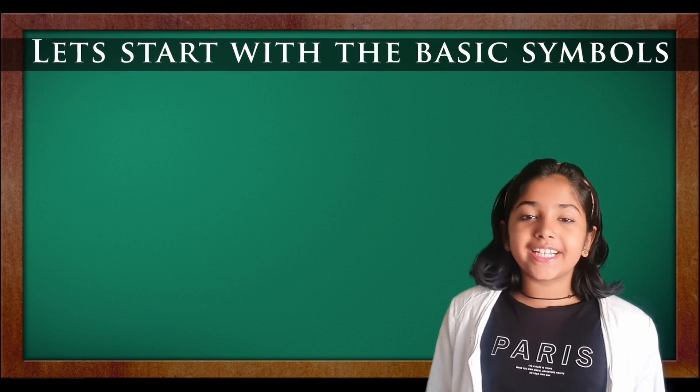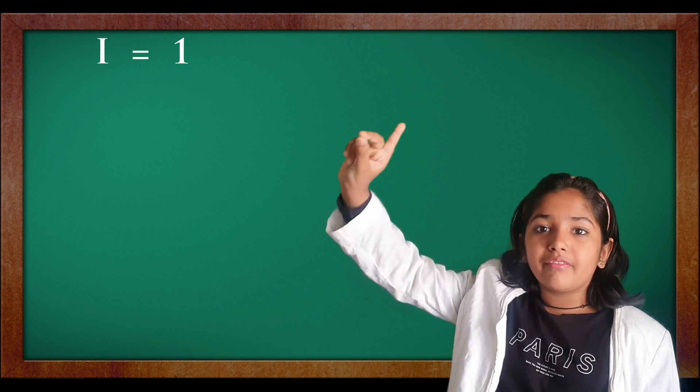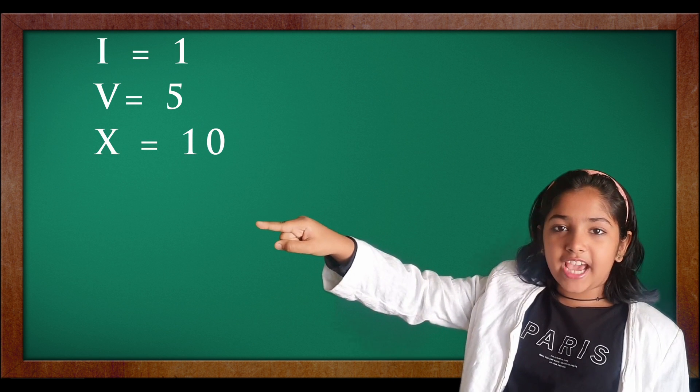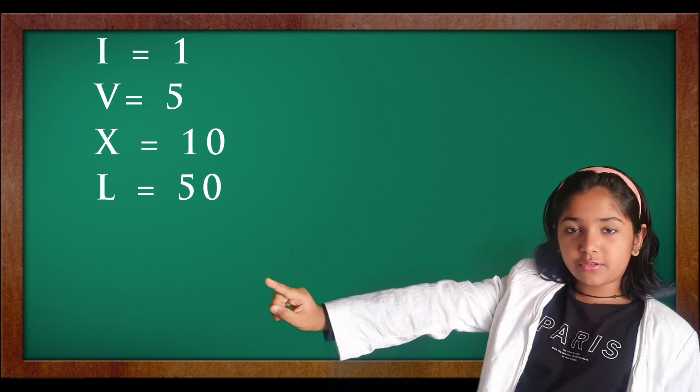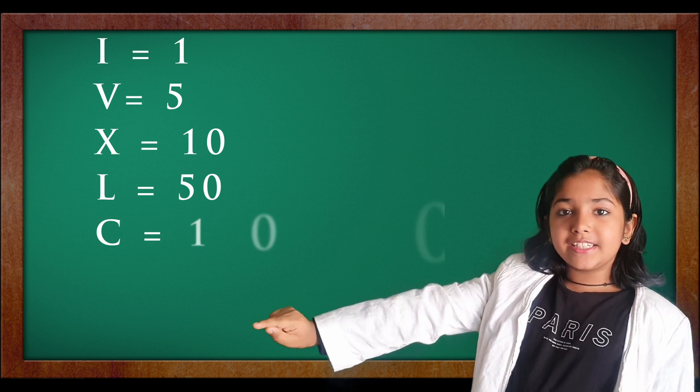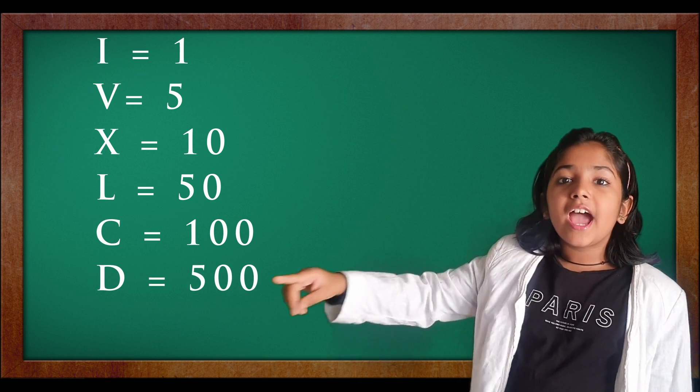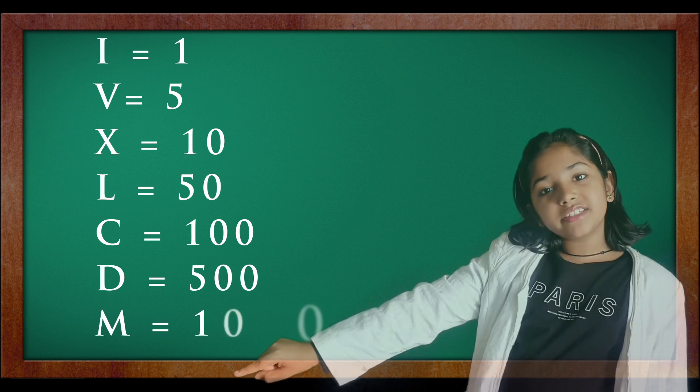Let's start with the basic symbols. I is equal to 1, V is equal to 5, X is equal to 10, L is equal to 50, C is equal to 100, D is equal to 500 and M is equal to 1000. It is good to memorize this.